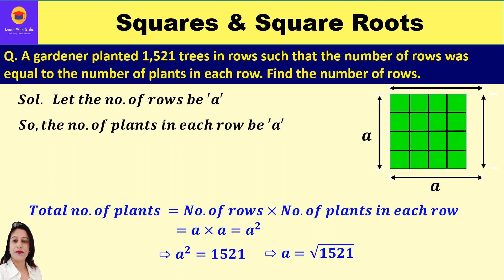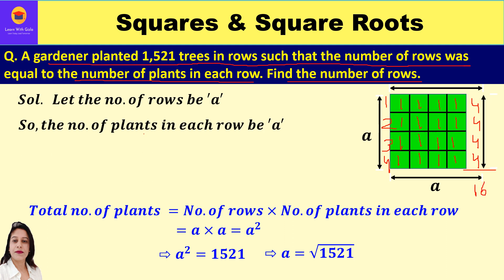The first question says: a gardener planted 1521 trees in rows such that the number of rows was equal to the number of plants in each row. Find the number of rows. Suppose I take 4 rows and plant an equal number of plants in each row — 4 plants in each row — so the total number of plants is 16.